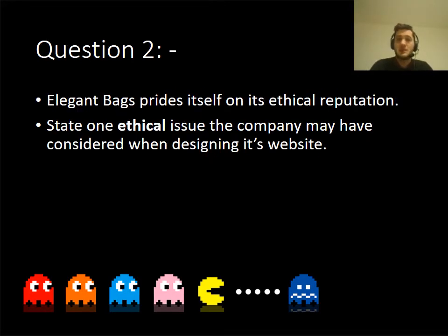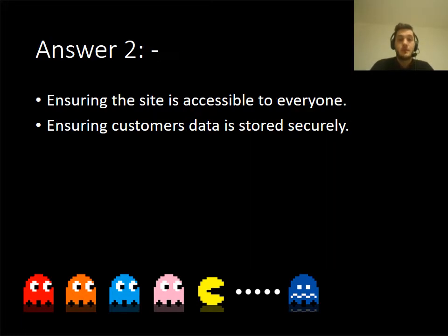Question two is a little bit simpler and it's about ethics. A lot of students started talking about how the website had to make sure it didn't offend people or wasn't racist, but it's actually talking about accessibility. An ethical issue is ensuring that everybody has access to the website. You also need to make sure that customers' data is stored securely. You could even extend this into six-mark questions about the Data Protection Act.